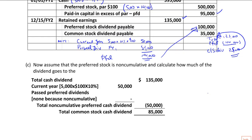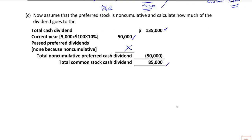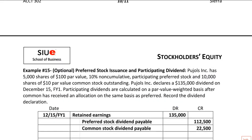The question is how it changes if the preferred becomes non-cumulative. With the exact same setup, all we do is change cumulative to non-cumulative. The preferred gets only the current year's dividend of $50,000 — no past dividends since it's non-cumulative. So $135,000 minus $50,000 leaves $85,000 going to common stockholders. Non-cumulative results in a larger payout to common. If we had participating preferred, that would increase the preferred amount further.